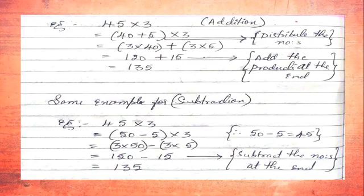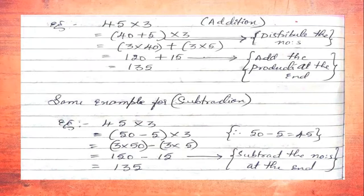The symbol between the products is plus, so we add the products. We got 120 and 15. After multiplying we add: 120 + 15 = 135. So for the addition case, 45 distributed as 40 + 5 gives us the answer 135.